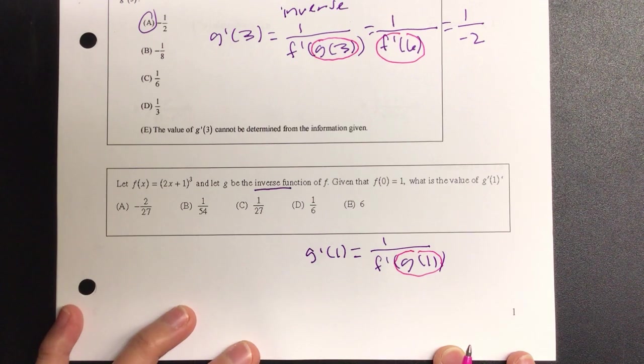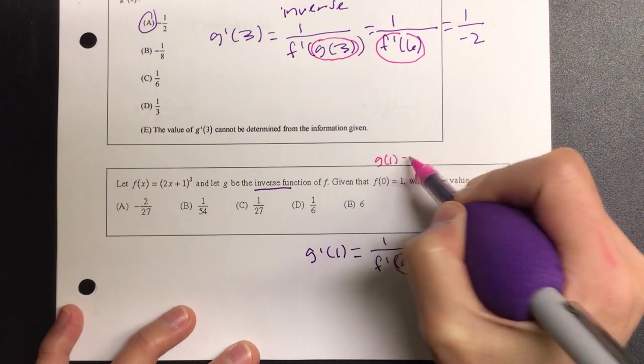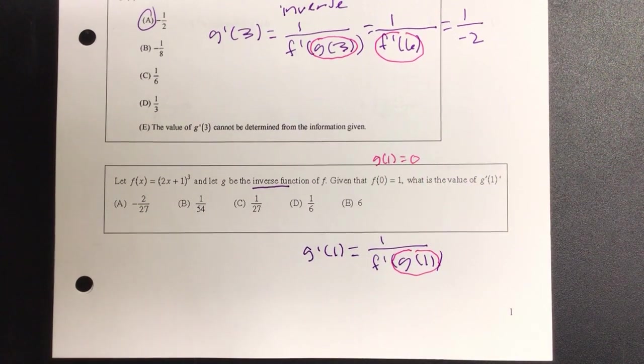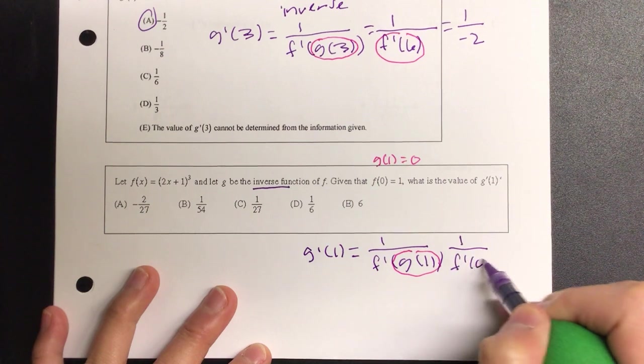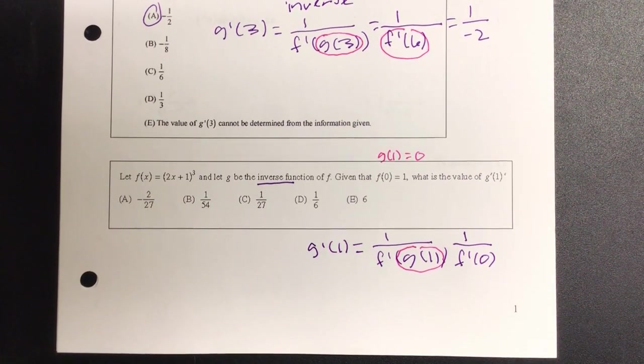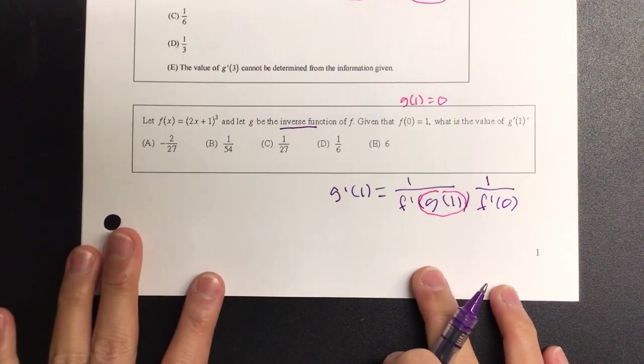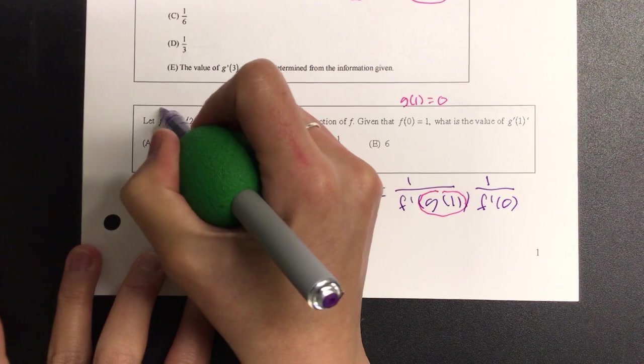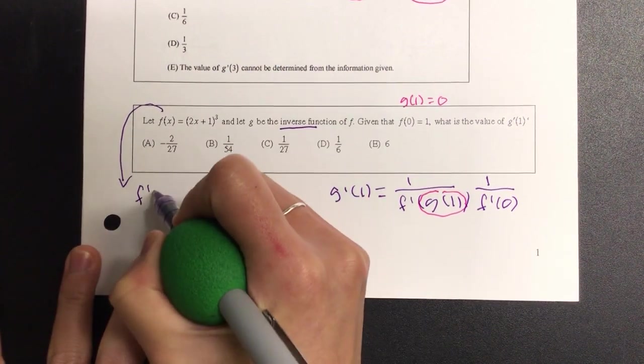Should I rewrite one of them? g(1) is 0. So we're now looking at 1 all over f'(0). And do I have anything with the f'(0)? If I know my f(x), can I go ahead and derive that and find the f' and then plug in the 0? Yeah, for sure.